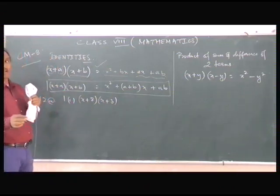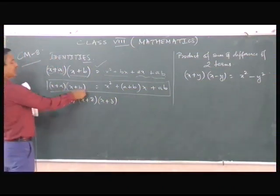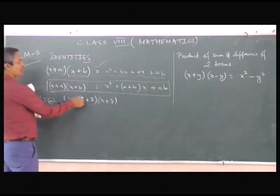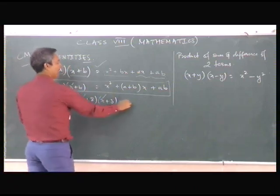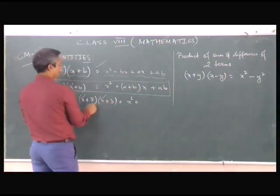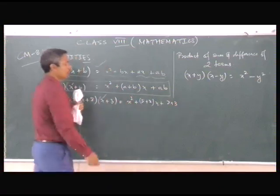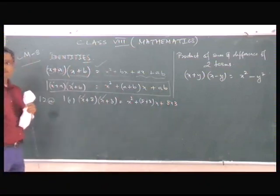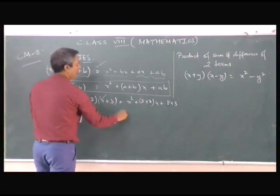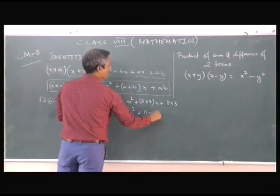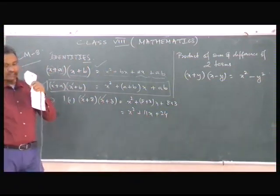Now you should be able to identify the terms and which formula or identity you are going to use. We have (x + a)(x + b), so x + 8 and x + 3. The first term must be the same; the second term may vary. So we use the formula: x² + (a + b)x + ab, which gives x² + (8 + 3)x + (8 × 3) = x² + 11x + 24. We have used this identity.